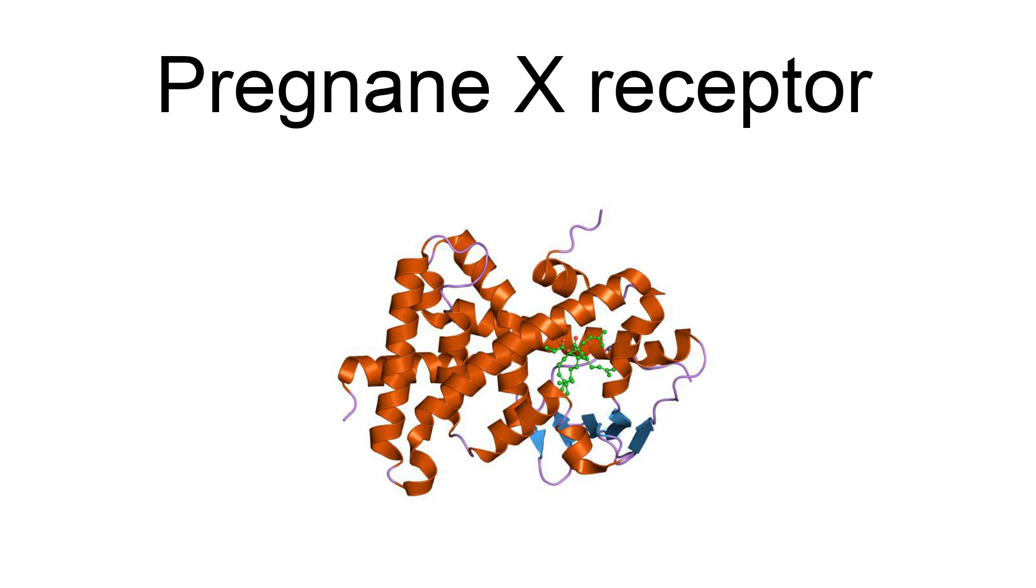In the field of molecular biology, the pregnane X receptor (PXR), also known as the steroid and xenobiotic sensing nuclear receptor (SXR), or nuclear receptor subfamily 1, group I, member 2 (NR1I2).